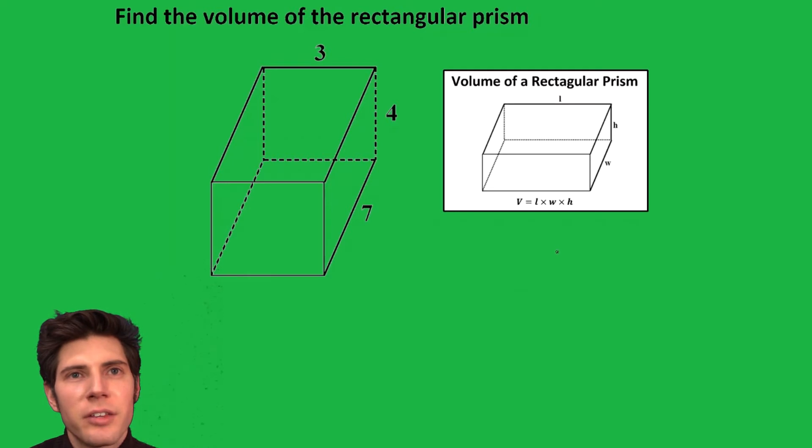This is the formula for finding the volume of a rectangular prism: length times width times height.